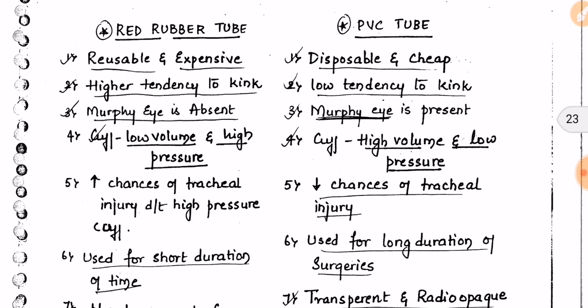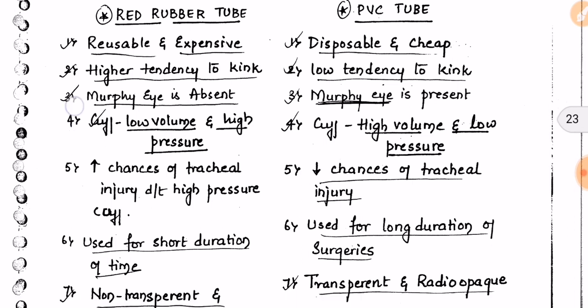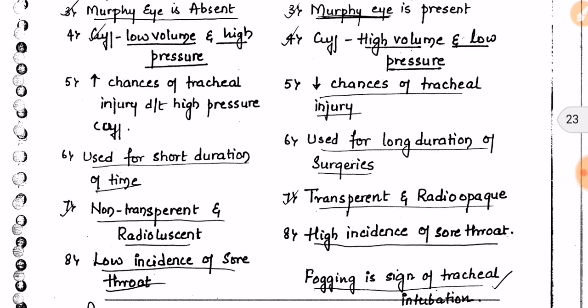Now for the differences: the red rubber tube has a higher tendency to kink, while PVC has a lower tendency. Murphy's eye is absent in red rubber but present in PVC. The red rubber cuff has low volume and high pressure, whereas PVC has high volume and low pressure. Because of the high pressure cuff, there is increased chance of tracheal injury with the red rubber tube.